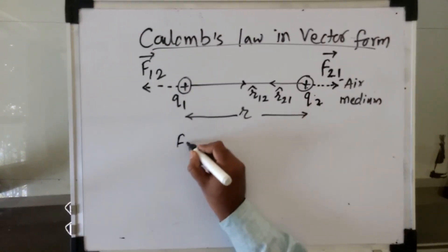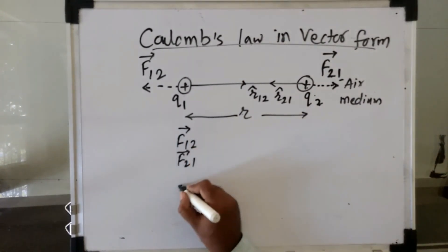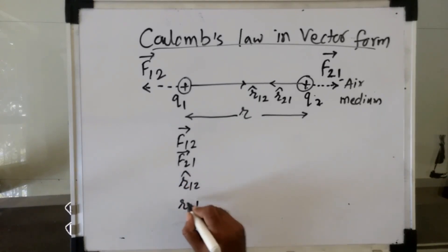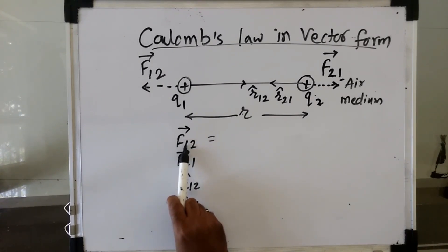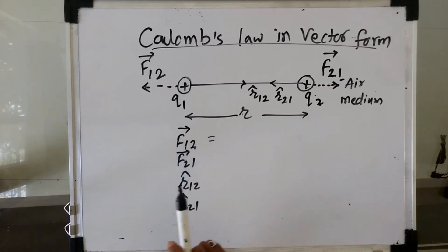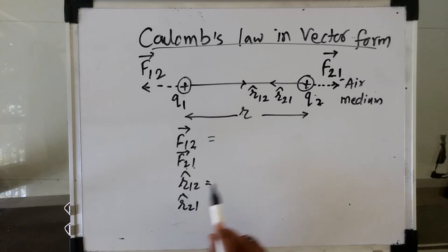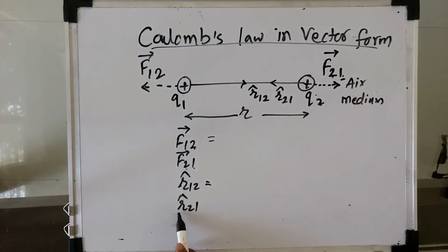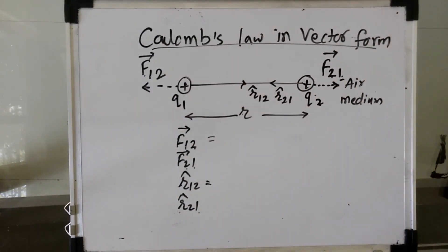So we have four terms now: F12 bar, F21 bar, R12 cap, and R21 cap. To summarize — F12 bar is the force acting on the first charge due to the second; F21 bar is the force acting on the second charge due to the first. R12 cap is the unit vector directed along force F21 bar, and R21 cap is the unit vector directed along force F12 bar. This is the prerequisite for Coulomb's law in vector form.